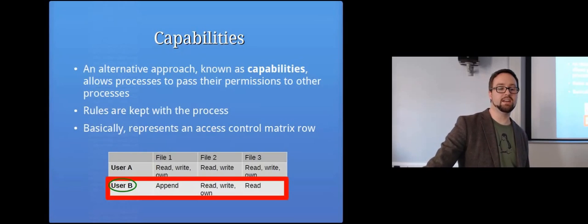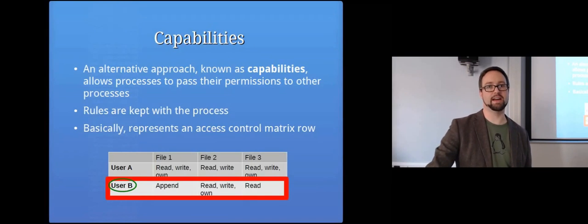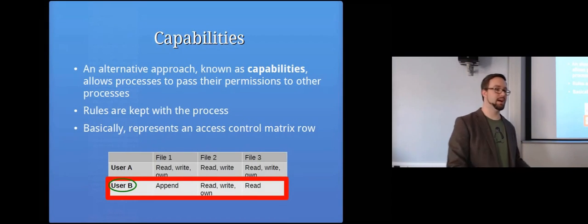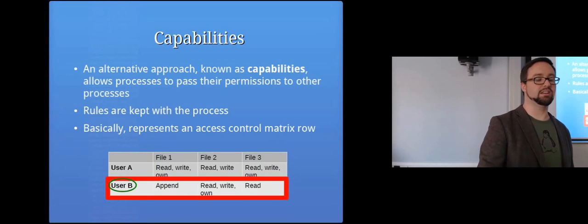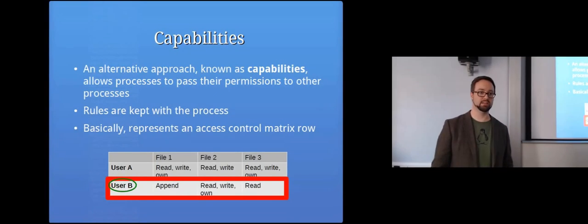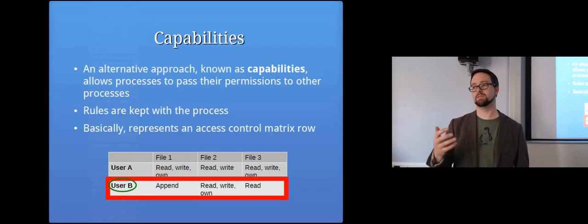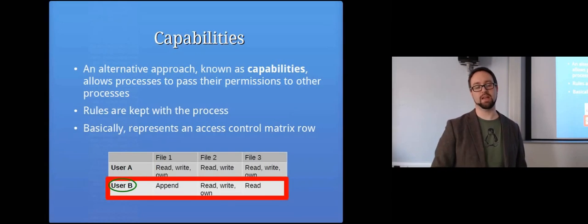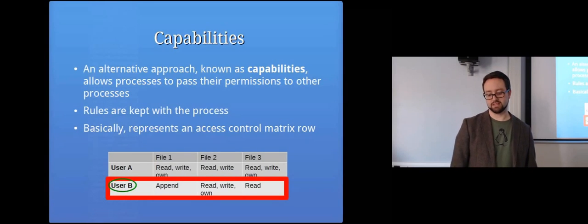Capabilities are an alternative approach to ACLs. Instead of attaching who's allowed to do what to the objects, you attach that information to the subject — you keep the rules with the processes. If an ACL is a list stapled to a file of users allowed to read it, a capability is like something clipped to your name badge listing the files you're allowed to access. You obtain a token proving you're allowed to access something, and when you present it, you're granted access.